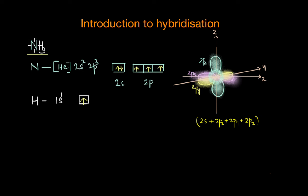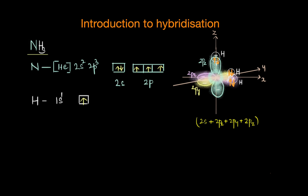We have three unpaired electrons in the 2p orbitals of a nitrogen atom that can overlap with the valence electrons of three hydrogen atoms. That way we would get three N-H bonds. The valence electrons from three hydrogen atoms have paired with the unpaired electrons of the 2p orbitals. So this is how bond formation would happen based on the orbital overlap concept.